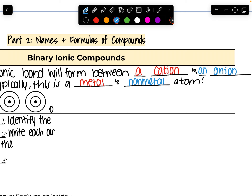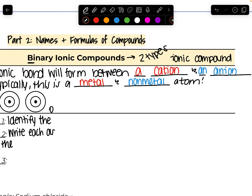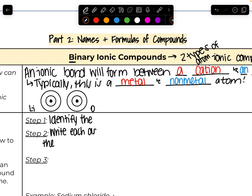An ionic bond forms between a cation and an anion. We're looking at binary situations first. The prefix 'bi' means two, so a binary ionic compound has two types of atoms. How does an ionic bond form? It happens because there is a full transfer of electrons.